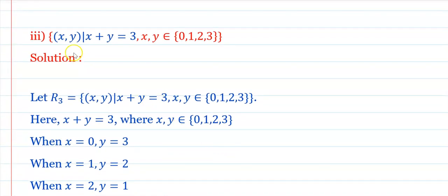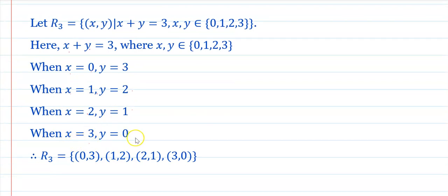R₃: x+y=3, x and y ∈ {0,1,2,3}. When x=0, y=3; x=1, y=2; x=2, y=1; x=3, y=0. So R₃ = {(0,3),(1,2),(2,1),(3,0)}.